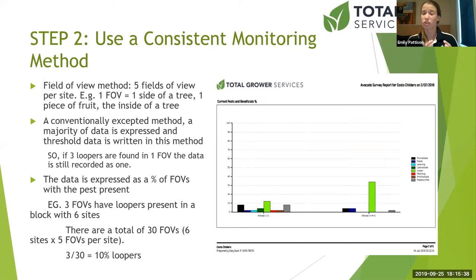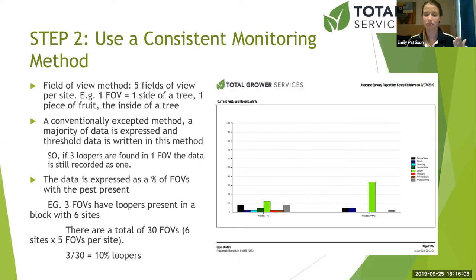If you see a pest in that field of view, that counts as one. This calibrates for swarming pests - you could have a lot of loopers in one field of view, but you'd write it down as one, not 30. Otherwise it would look like you have a really huge problem and need to treat straight away, even though it's only affected this one side of one tree. That's why we use a field of view method.